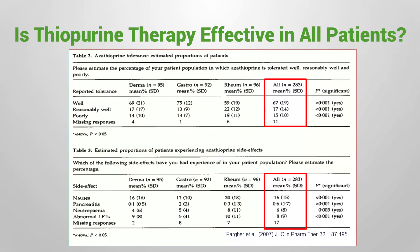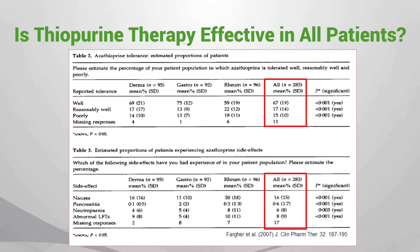Though thiopurine drugs are efficacious, these drugs are not effective in all patients. A survey was conducted in Europe to explore the use of thiopurine drug therapy. 67% of patients responded well; however, 15% responded poorly and had adverse effects which include pancreatitis, neutropenia, and abnormal liver function tests.